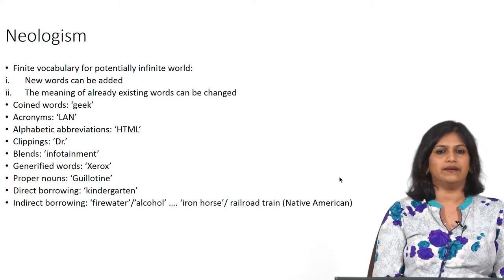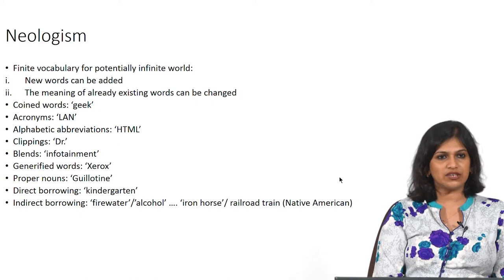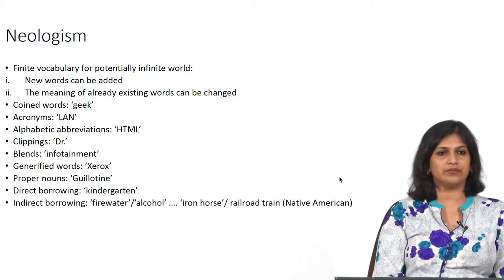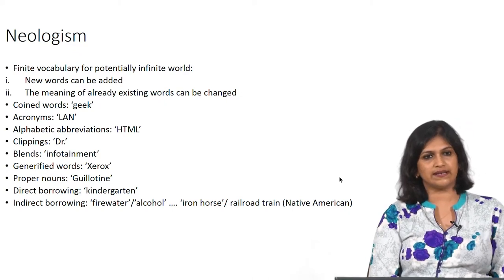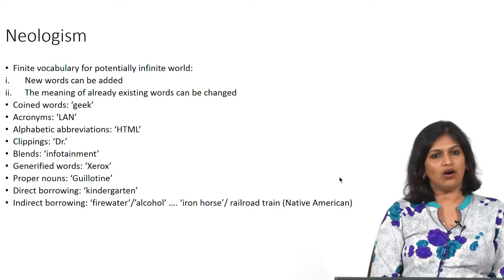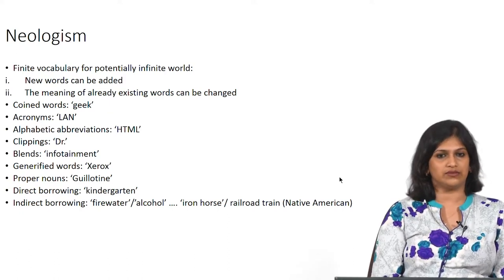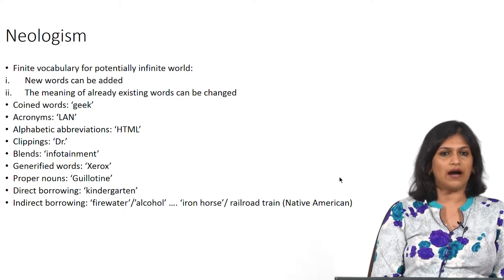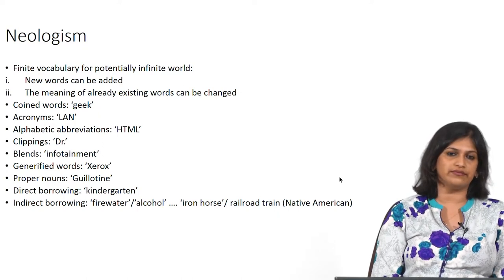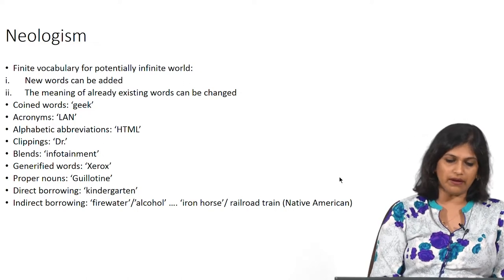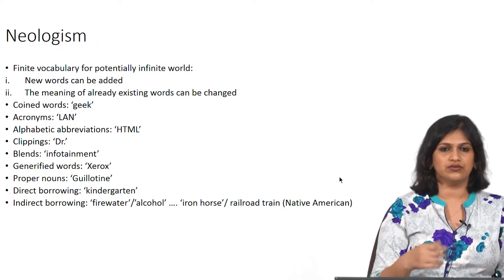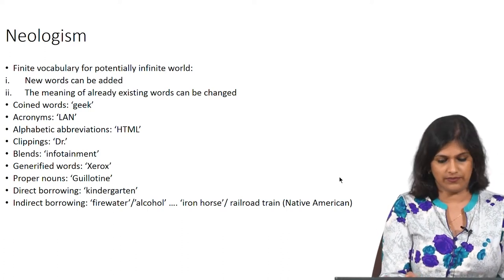The different processes by which new words get added to the English lexicon include: coining, acronymizing, abbreviating, clipping, blending, generifying words, using proper nouns as common nouns, direct borrowing, and indirect borrowing. My suggestion for participants: make sure you understand the processes well, try to add as many other English words as possible, and try to extend the analysis to your own first language.